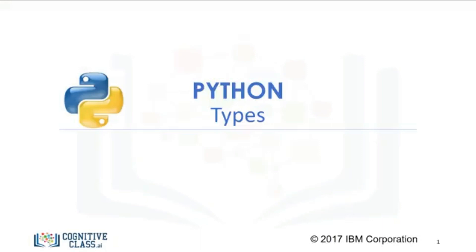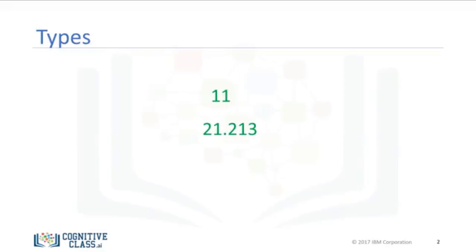A type is how Python represents different types of data. In this video, we will discuss some widely used types in Python. You can have different types in Python. They can be integers, like 11, real numbers, like 21.213. They can even be words. Integers, real numbers, and words can be expressed as different data types.